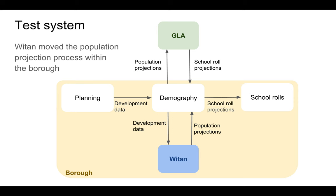The key thing that Witan has done is to move the population projection process to within the borough. Now, in a good practice borough, the planning department would send the development data to the demographer, who would upload it to Witan and generate their population projections, pass these to the GLA who run their school rolls model, and return the school rolls projections to the demographer, who then passes these on to the school rolls officer. In theory this might be how it would look, but no one's actually sure how it would look.